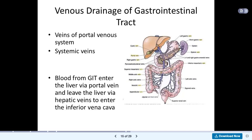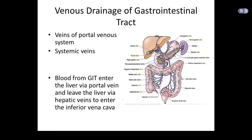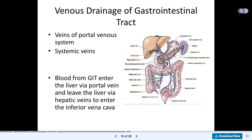In this diagram you will see different veins. Here you see the left gastric vein. The lesser curvature of the stomach will be drained by the left gastric vein and the right gastric vein. When we looked at the artery, the lesser curvature was supplied by the left and right gastric arteries. Now for venous drainage, the left gastric vein drains the upper part of the lesser curvature and the right gastric vein drains the lower part.